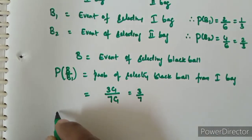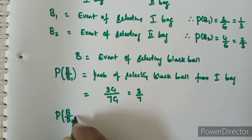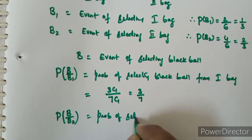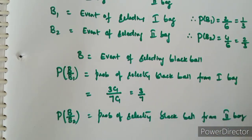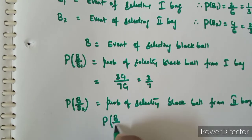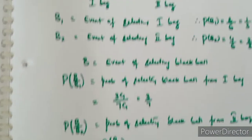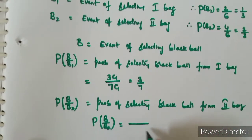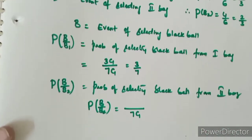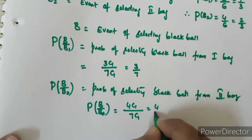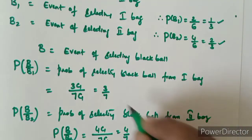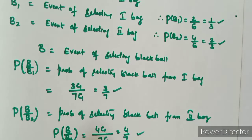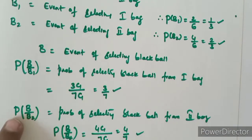Now, probability of selecting a black ball from the second bag. In the second bag there are 7 balls total. From those 7 balls, selecting one black ball — the second bag has 4 black balls out of 7, so P of B given B2 is 4 by 7. These are the two conditional probabilities for drawing a black ball from each bag.